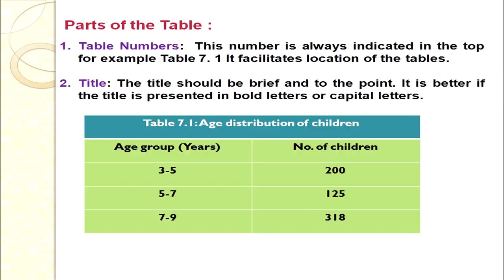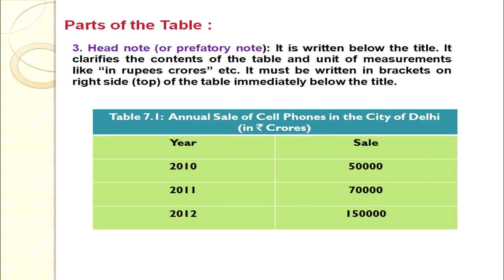The first part is the table number. Every table should be supported with a table number, always indicated at the top — for example, Table 7.1. We number the table because it facilitates location of the tables. The second part is the title. Every table must have a title that is brief and to the point, and if possible written in bold capital letters.